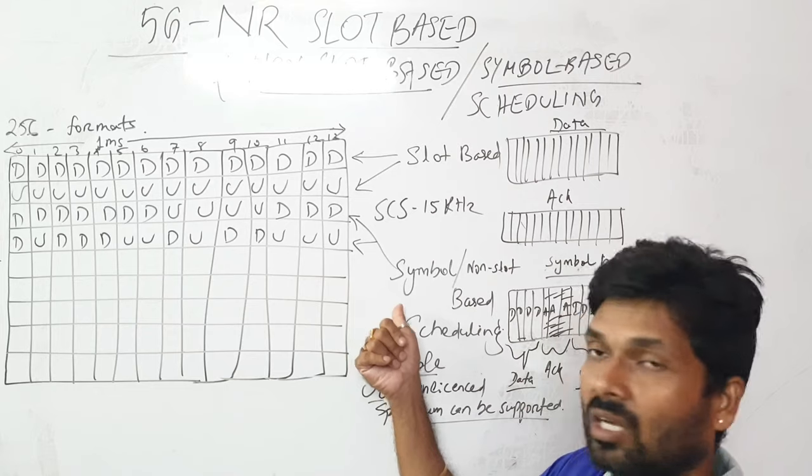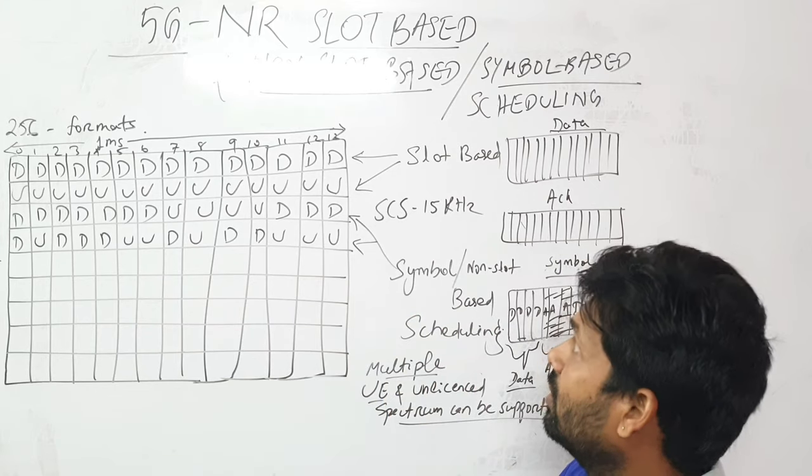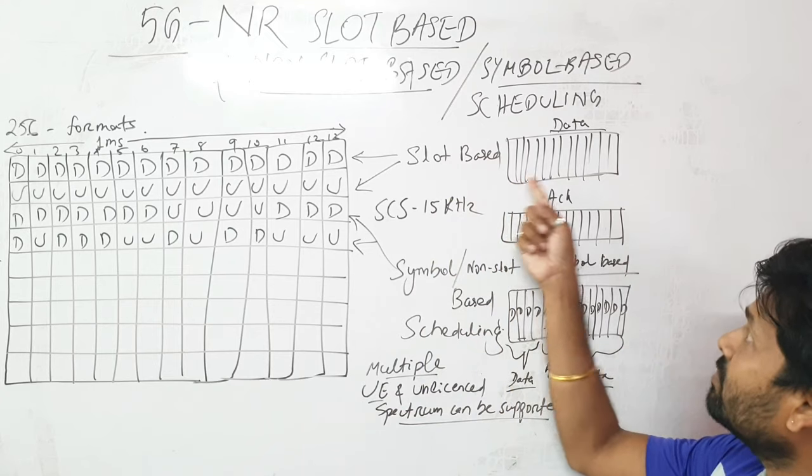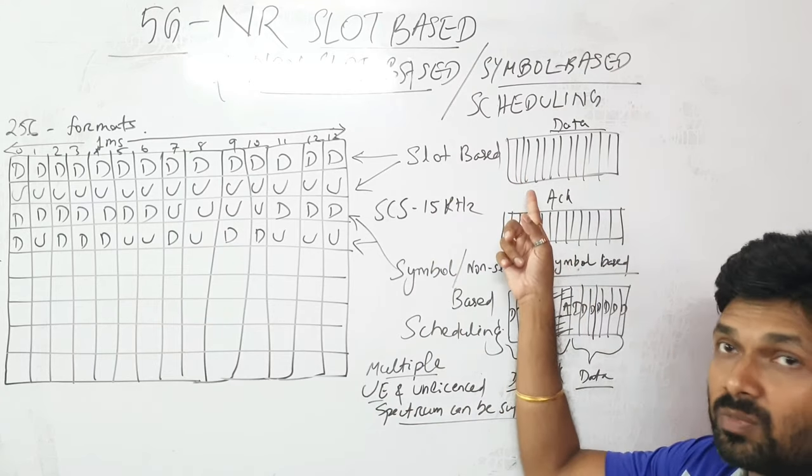For URLLC kind of applications, we can use this non-slot-based or symbol-based transmission. Slot-based means I'm sending all 14 symbols data, waiting for the second one for acknowledgement, then I can send the data in the third slot or third subframe.